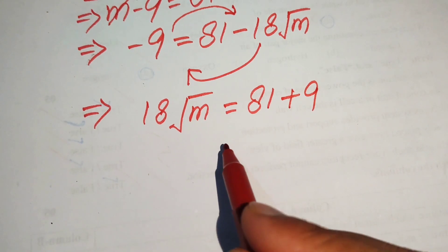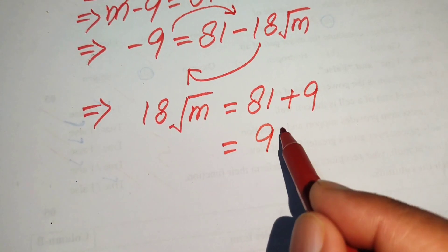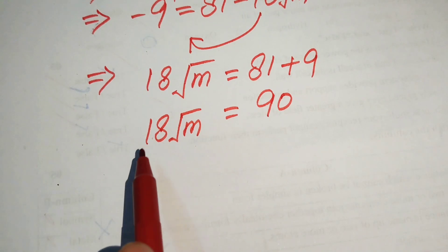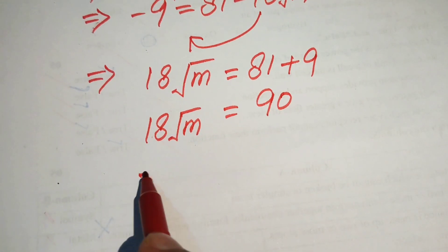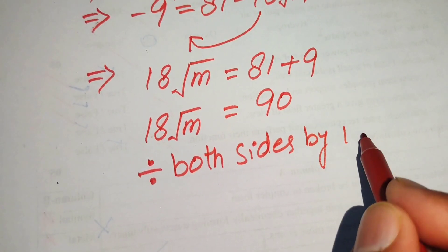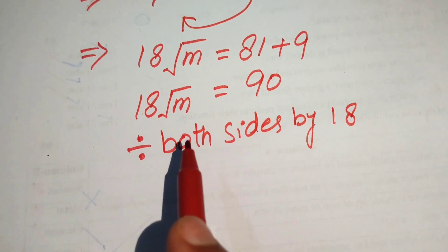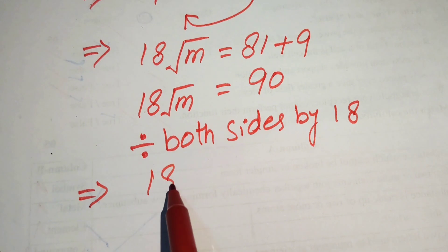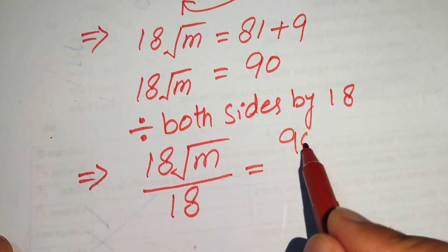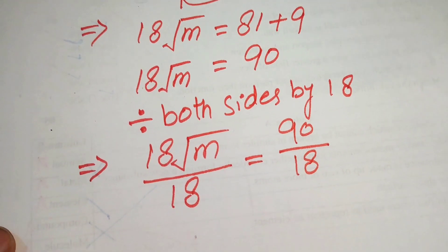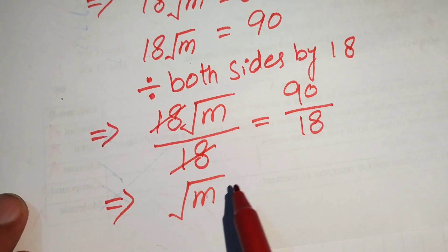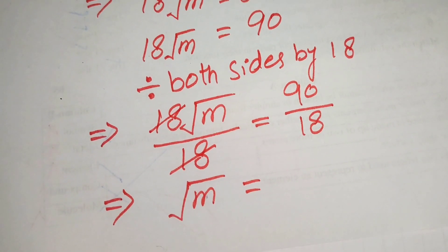After simplification, 81 plus 9 becomes 90, so we have 18 times square root of m equals 90. Now we divide both sides by 18 to find the value of m. So 18 times square root of m divided by 18 equals 90 divided by 18. The 18s cancel and we get square root of m equals 5.